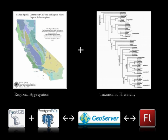We developed two ways to handle this problem. First, on the database server side, we aggregated the points to relevant polygon regions — in this case, Jepson sub-eco regions, which are defined by groups of flora.